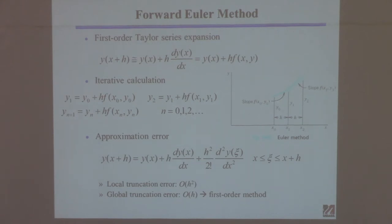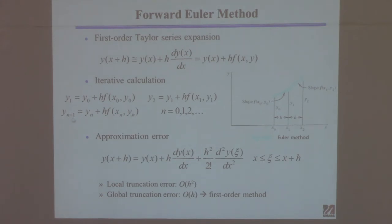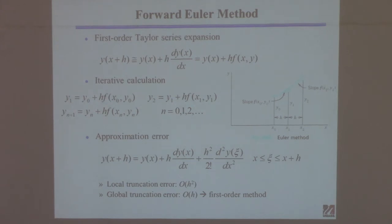You can take the solution for Y1, plug it into this equation with X1 and Y1, and get Y2. Generally speaking, this iterative equation says: if I give you Xn and Yn, this equation allows you to compute Yn+1. You always have a place to start because you have an initial condition. Start with the initial condition, compute Y1, then take Y1 and plug it back in with X1, get Y2, and just keep going until you're done. If you compute a lot of them, you can connect them and they'll look smooth.